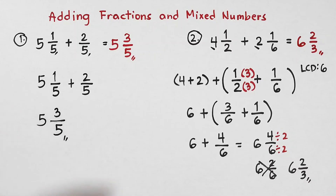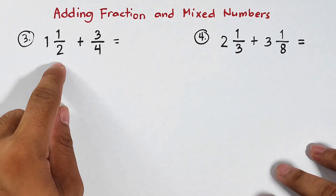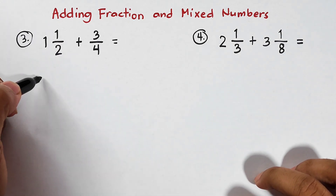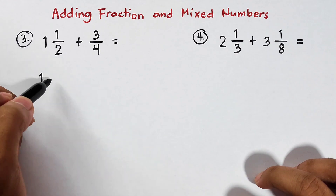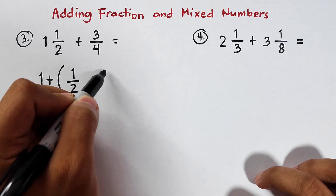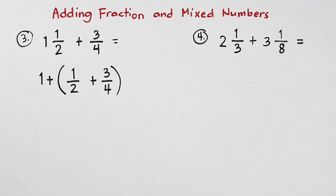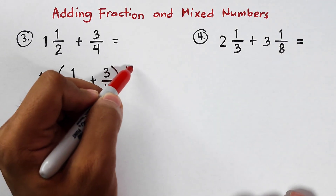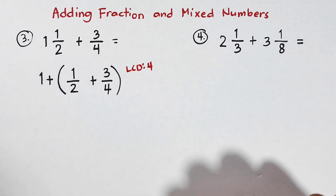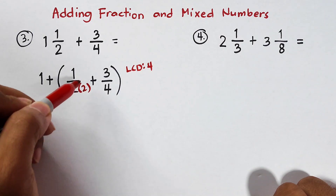Now let's move on with item number 3. For number 3, we have a mixed number and a fraction. Let's add them separately: 1, plus 1 half plus 3 over 4. What is the LCD of 2 and 4? The LCD is simply 4. We need to multiply the fraction 1 half to create a new fraction with a denominator of 4.